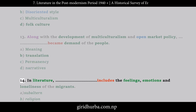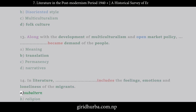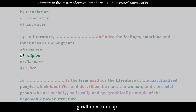Question 14: In literature, which includes the feelings, emotions, and loneliness of the migrants? A. Subaltern. B. Religion. C. Diaspora. D. Cyber.